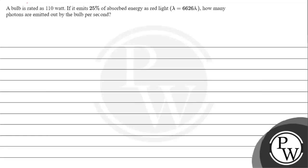Hello, let's get to the given question. The question says a bulb is rated as 110 watts. If it emits 25% of absorbed energy as red light having wavelength 6626 angstrom, how many photons are emitted by the bulb per second?